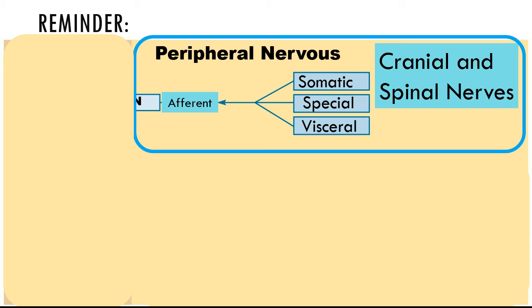Our cranial and spinal nerves are the organs of the peripheral nervous system — not afferent or efferent; that's function. The actual organs themselves are the cranial and spinal nerves. We're going to look at just the sensory afferent function of them, conveying somatic or body sensations, special senses, or visceral sensations to the central nervous system.